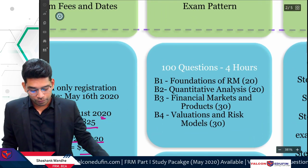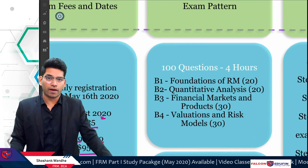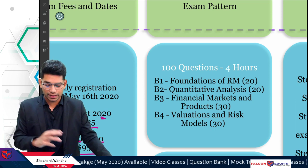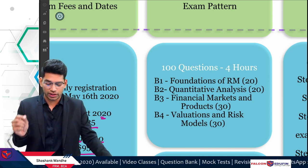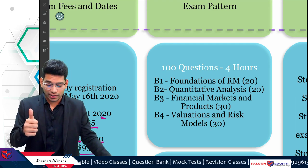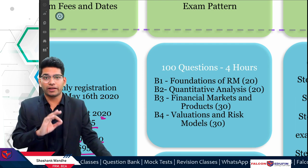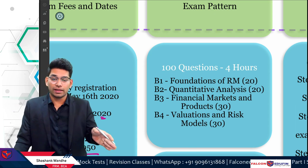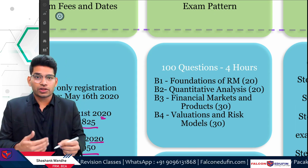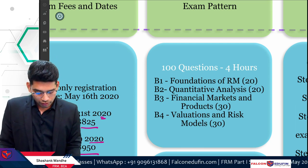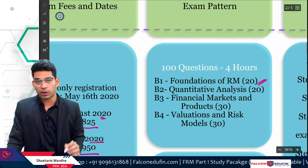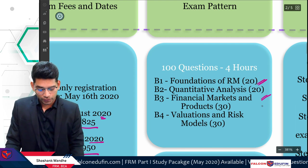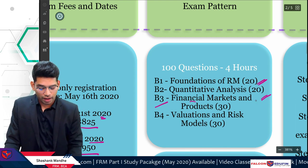In FRM Part 1, you will get 100 questions to solve in four hours. There are four subjects: Book 1 is Foundations of Risk Management, Book 2 is Quantitative Analysis, Book 3 is Financial Markets and Products, and Book 4 is Valuations and Risk Models — VRM, not VAR. You will get 20 questions from Book 1, 20 from Book 2, 30 from Book 3, and 30 from Book 4.